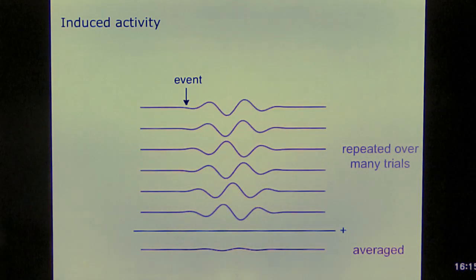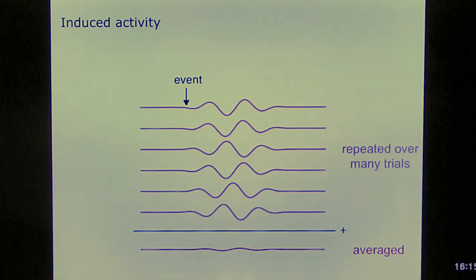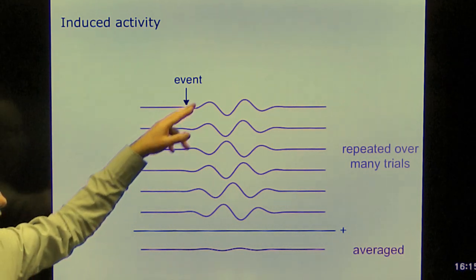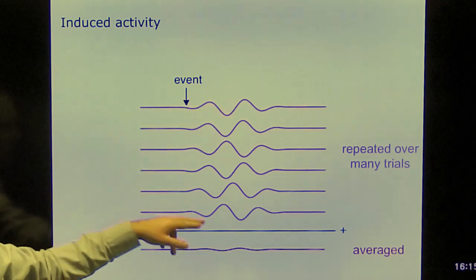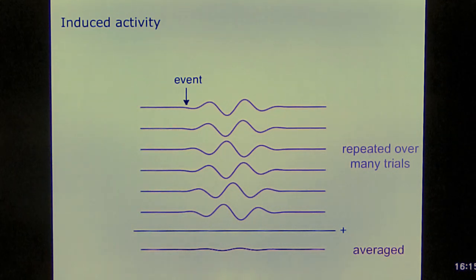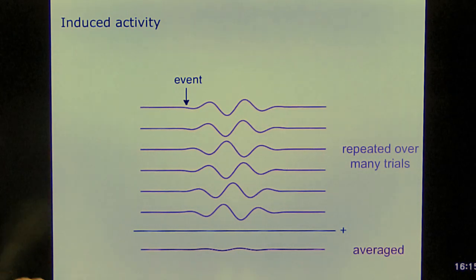However, there are also cases where the event is inducing activity which is not phase-locked to the event. So what you see here is activity that is time-locked. So following the event, there is cortical activity. But in some cases, the cortical activity starts with an upward deflection and in some cases it starts with a downward deflection. If we average this type of activity, we're not going to see anything in the event-related field. So that's why we need different analysis strategies for this, which we will touch upon tomorrow.